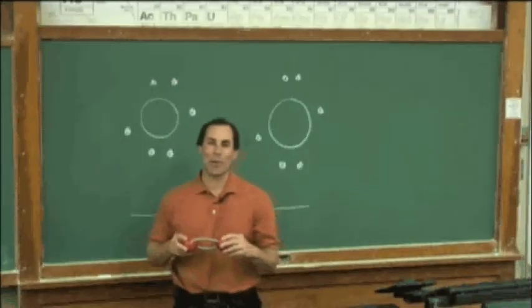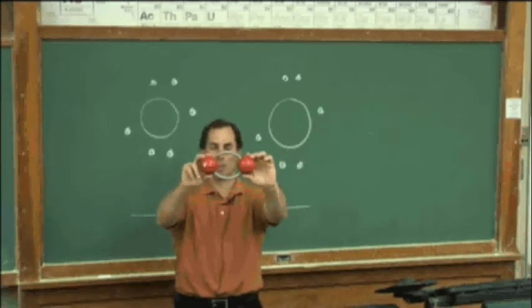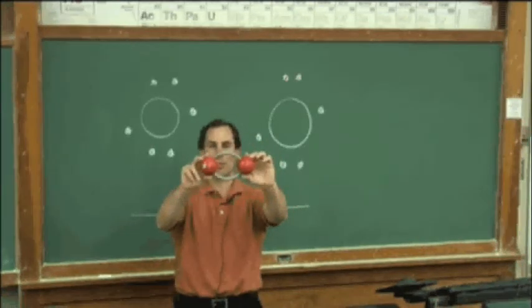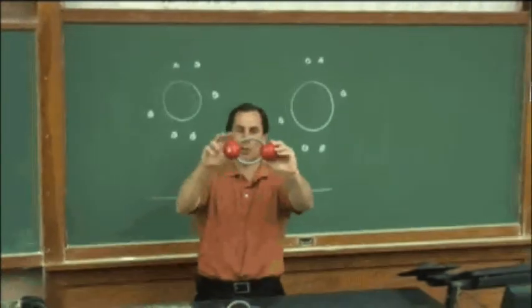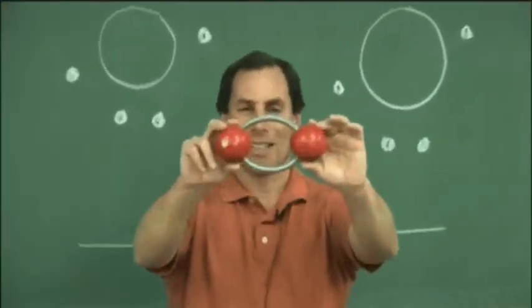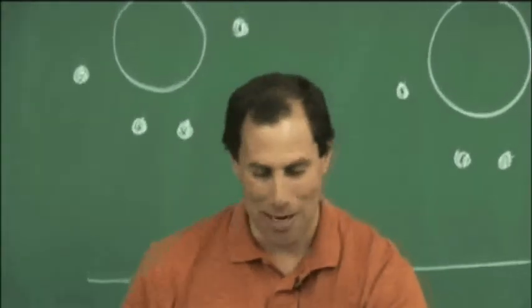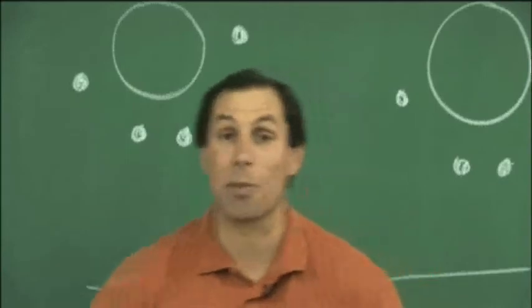A few moments ago I went ahead and put together some ball and stick, or ball and spring models for oxygen molecule. We have a couple of oxygen atoms. They're connected by two springs, which is a nice little model showing that we have a double bond. Let's quickly take a look at the periodic table of the elements and talk about what types of bonds we can expect in some small molecules.